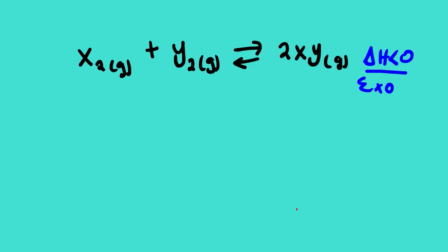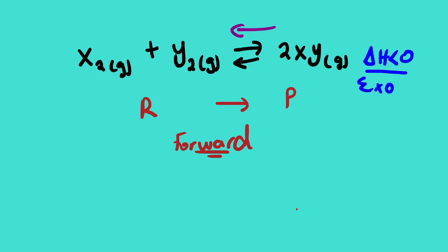Moving from the reactants to the products, we call this the forward reaction. If we use the arrow from the products to the reactants, we say the reverse reaction is favored. Be familiar with these terms — we are going to use them throughout this lesson.